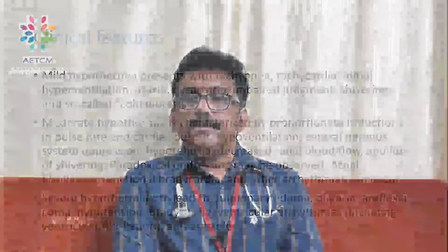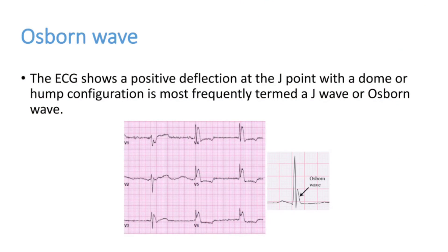Whenever a patient is admitted to the emergency room, the first investigation done will be blood sugar. Blood sugar can be low in this condition; if the patient is diabetic, there can be an elevation in blood sugar in the acute phase, but most of the time it will be low. An ECG should also be taken — it may show a typical finding called the Osborne wave, where the J point is elevated. This is a typical ECG finding seen in hypothermic patients.